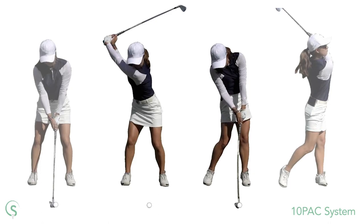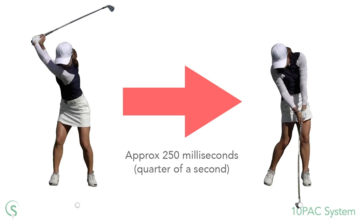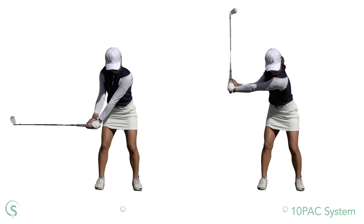Take the downswing for example. Although it's over in fractions of a second, a lot happens during that time. So to properly understand what's going on, we have to divide the swing into even smaller timescales. The best way to do this is to take the club shaft's alignment during the swing. Each time the club is horizontal or vertical, this marks an additional key position by which we can divide the swing.